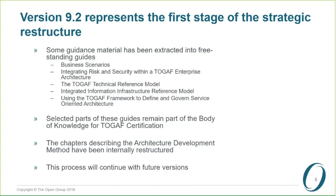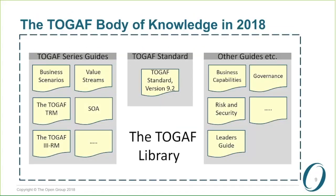That process will continue with future versions. The TOGAF body of knowledge in 2018 is very much richer than it was in 2011. We do have the standard sitting in the middle — the TOGAF standard version 9.2 — but now that is surrounded by dozens of other documents providing helpful guidance and advice on how you can make practical use of that TOGAF standard. We call this the TOGAF Library. I'm going to talk more about that and also about TOGAF series guides as we move through this presentation.